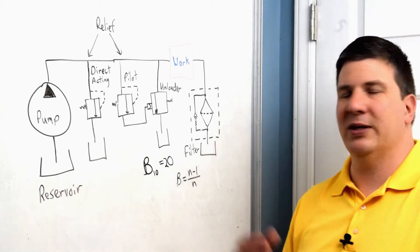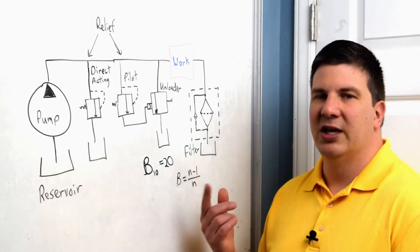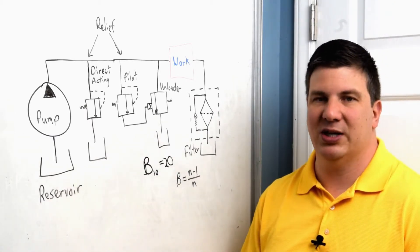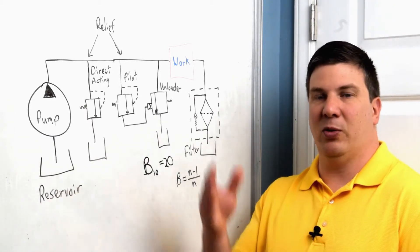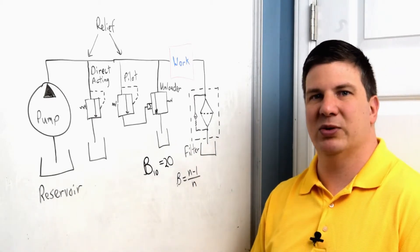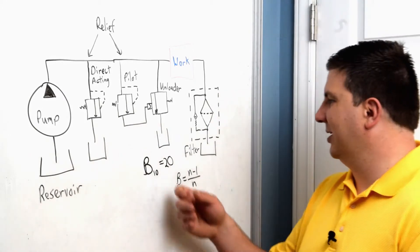So it's a diminishing returns. If I go up to a beta thousand, I'm getting 99.9%. I went up a whole bunch. I went up 10 times there and got not even 1% better. So there's a diminishing return.